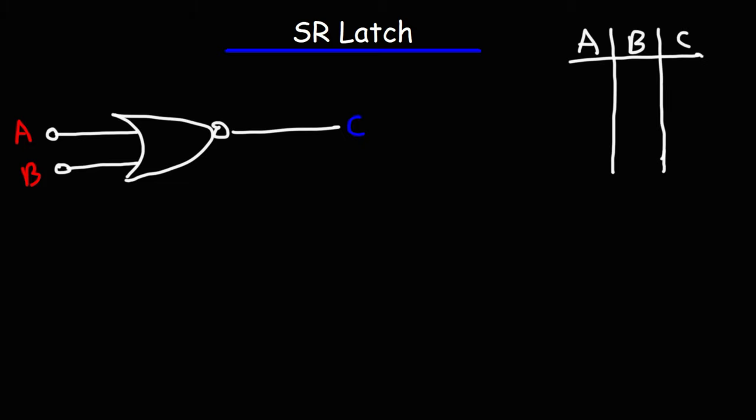The way I remember this truth table is by thinking about the OR gate. For the OR gate, if A or B is 1, C will be 1. The NOR gate is just the opposite — if A or B is 1, C will be 0. So the only time the output is 1 is if A and B are both 0. For all other situations, the output will be 0. That's the truth table for the NOR gate.